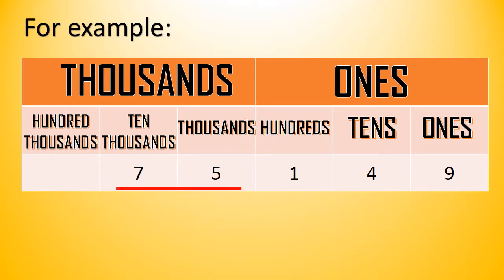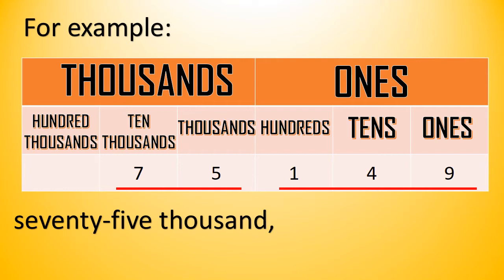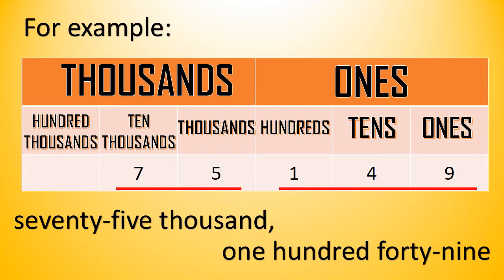How do we read this number? This is 75, and it belongs to the thousands period, so we read this as 75,000. This is 149, and it belongs to the ones period. We do not read this as 149,1 — because 149,1 is the same as 149. So we read this number as 75,149. How do we write this number in words? This is how we write 75,000 and this is how we write 149. So again, this is 75,149.